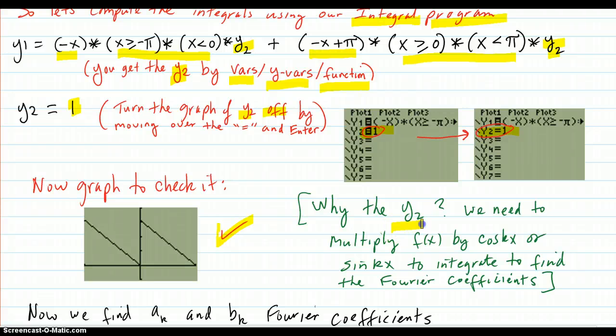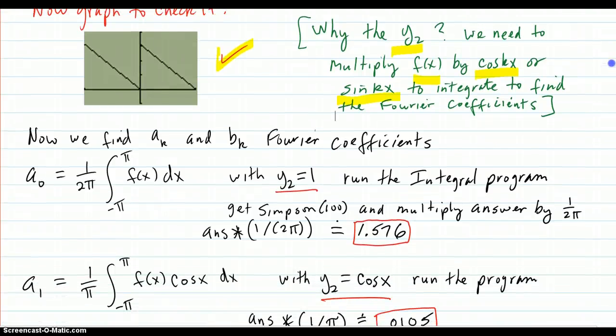And why are we putting that y2 in there? Because we're going to have to be multiplying the f of x by cosine of kx and sine of kx to integrate to find the rest of the Fourier coefficients. And we don't want to be typing that inside here all the time. So I put it in, we're going to put it in y2.